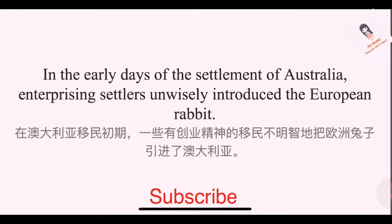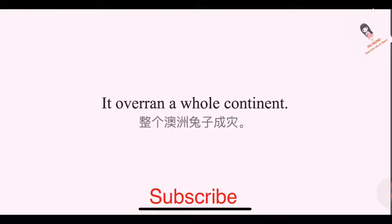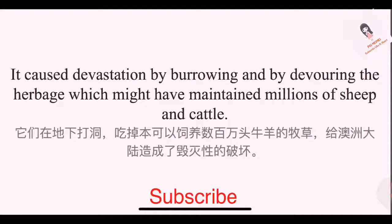In the early days of the settlement of Australia, enterprising settlers unwisely introduced the European rabbit. This rabbit had no natural enemies in the Antipodes, so that it multiplied with that promiscuous abandon characteristic of rabbits. It overran a whole continent.